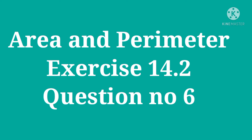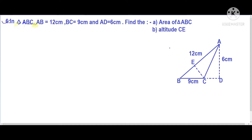Welcome back students. Today we'll solve question number six. In triangle ABC, AB is 12 centimeters, BC is 9 centimeters, and AD is 6 centimeters. We need to find the area of triangle ABC.